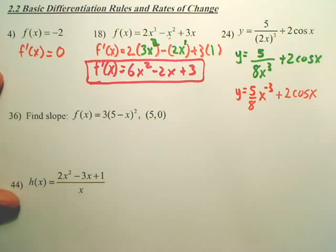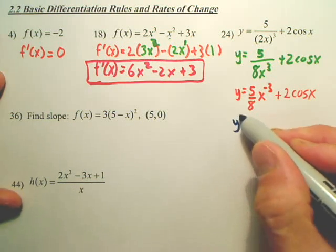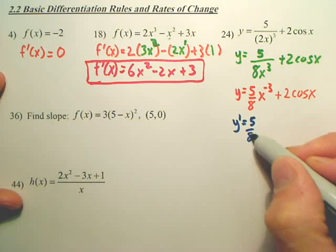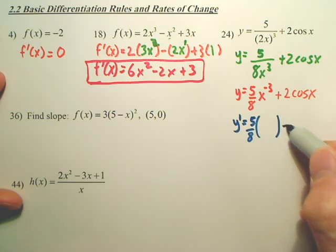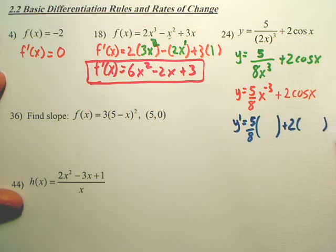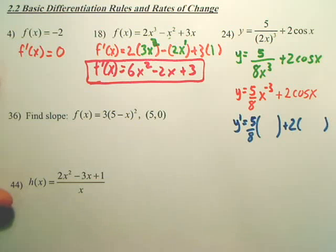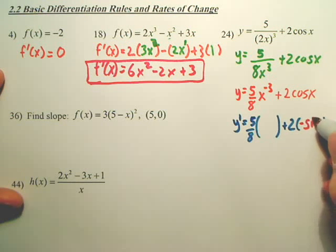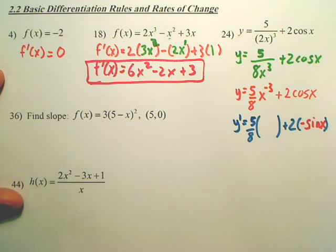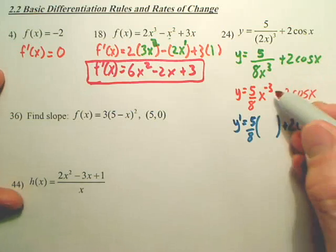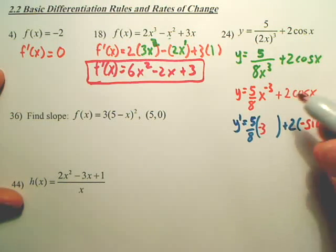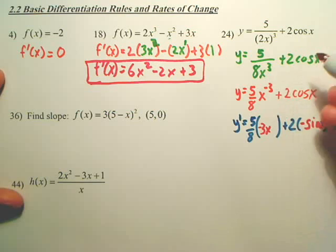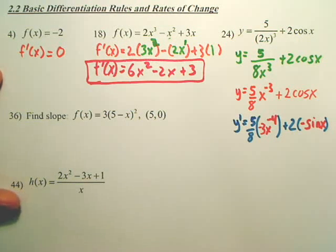Now let's derive. Leave the 5/8 and derive x to the negative third: bring the negative 3 out front, keep x, and subtract 1 from the exponent to get negative 4. Leave the 2 and derive cosine — the derivative of cosine is negative sine x.